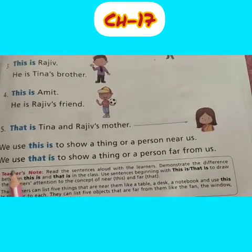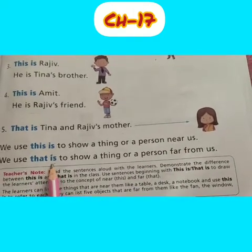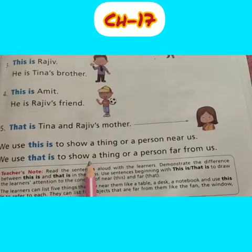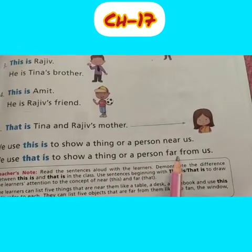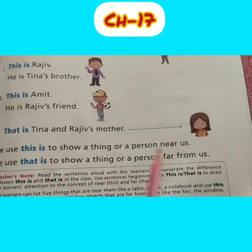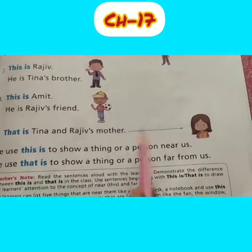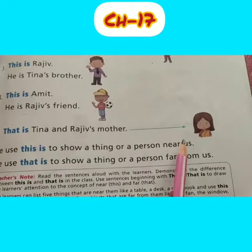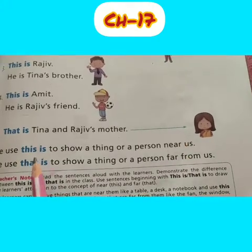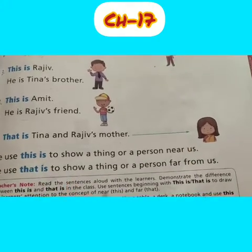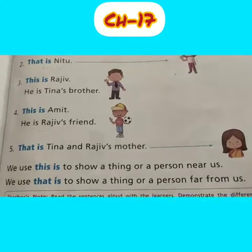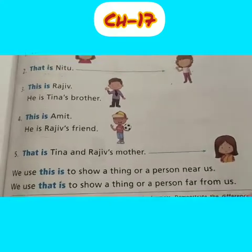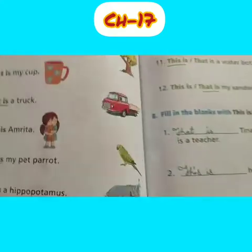And we use 'that is' to show a thing or a person far from us. For things far from us, we use 'that', and for things near to us, we use 'this'.